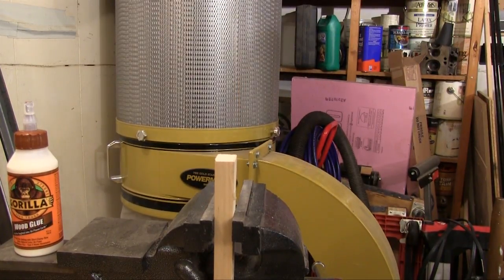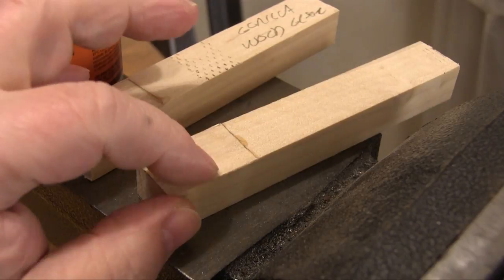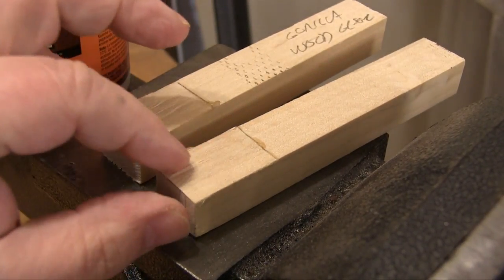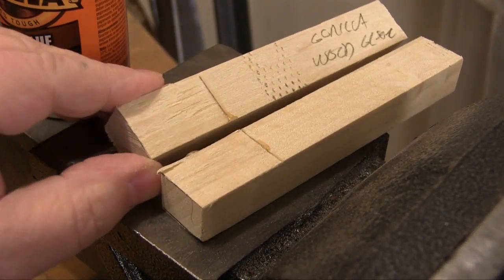Despite the small contact point, the amount of force needed kind of surprised me. And here you can see that we pulled wood out of both sides of the joint. That tells us that the wood gave up, not the glue itself.